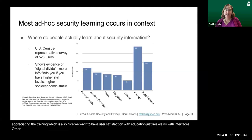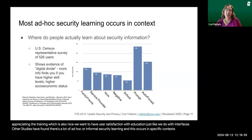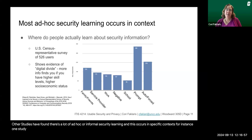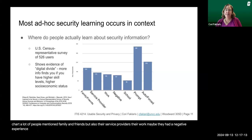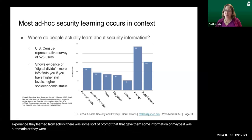Other studies have found there's a lot of ad hoc or informal security learning, occurring in specific contexts. One study surveyed 526 users about where they learned security information. Many mentioned family and friends, but also service providers, work, negative experiences, school, software prompts, or automatic/mandatory learning.